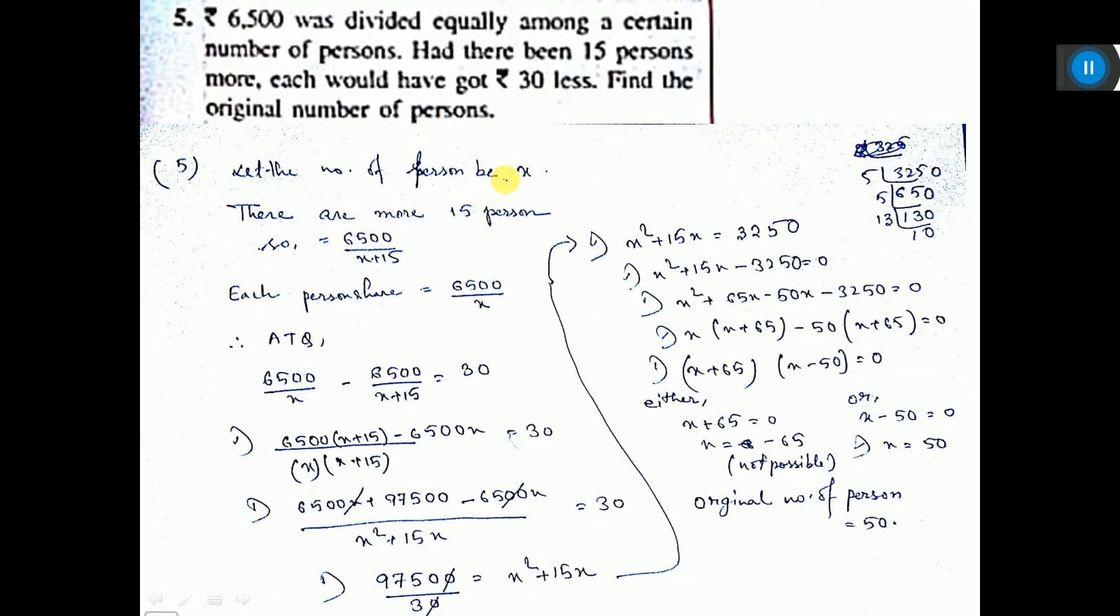So if you consider the original number of persons as X, then each person will get 6,500 divided by X. Now, if there are 15 persons more, then each will get 6,500 divided by X plus 15.